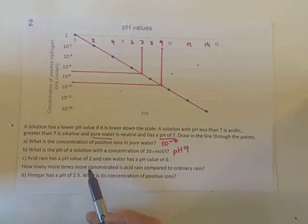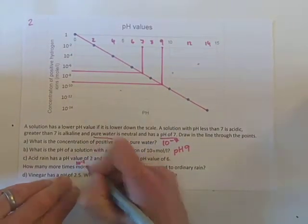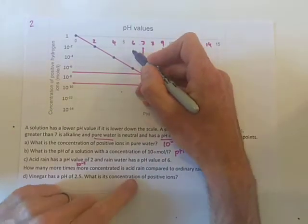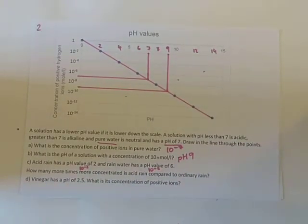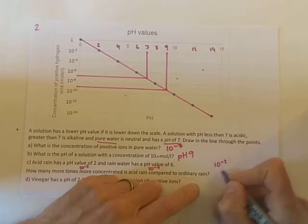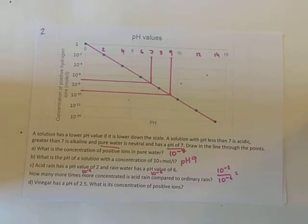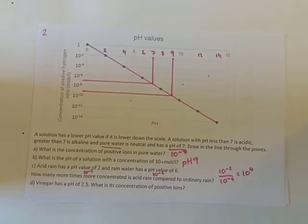Acid rain has a pH value of 2, so that's 10 to the minus 2. Rainwater has a pH value of 6, which gives 10 to the minus 6. To find how many times more concentrated acid rain is compared to ordinary rain, we do 10 to the power of minus 2 divided by 10 to the power of minus 6. Using our index laws this gives us 10 to the power of 4, or 10,000 times more concentrated.